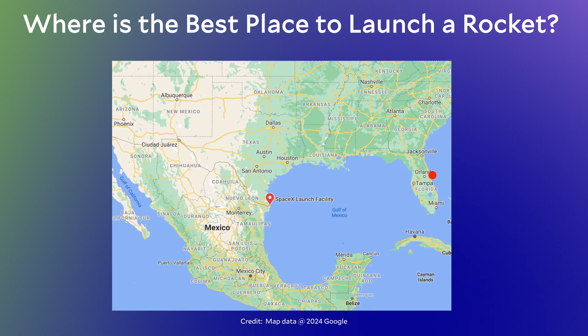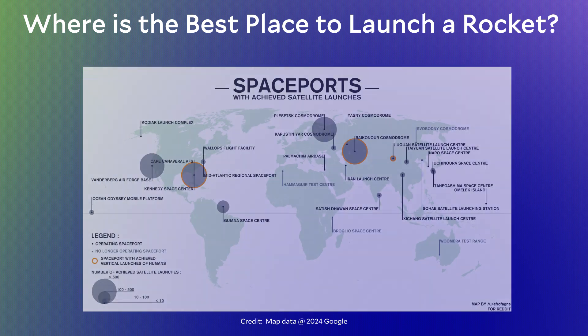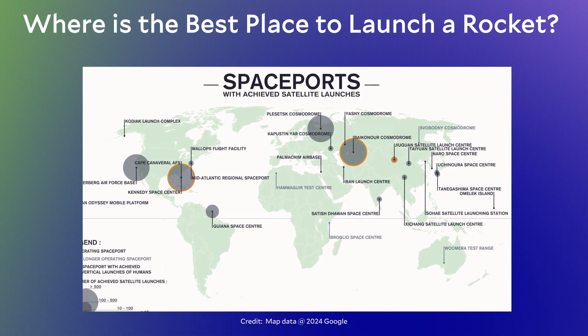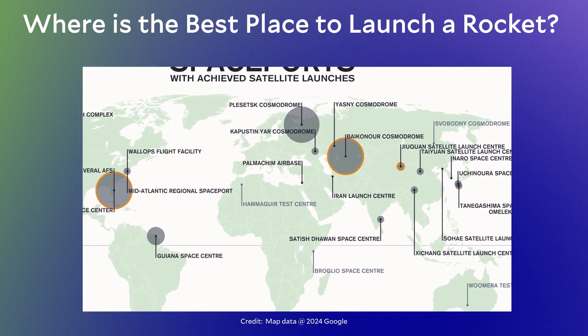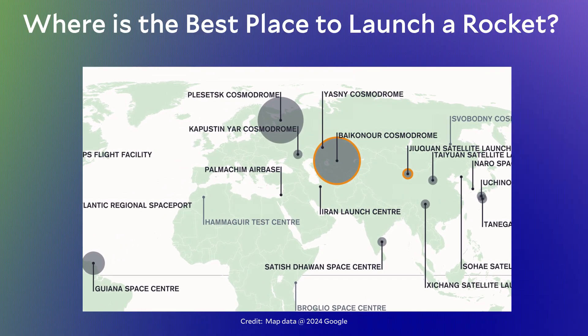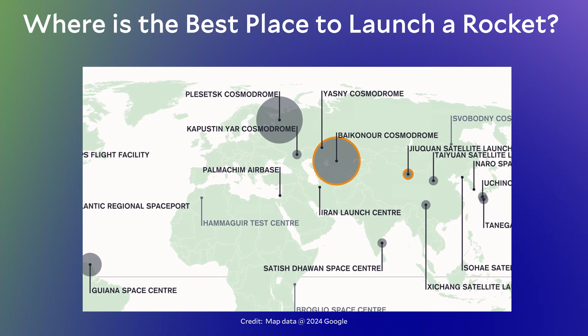Again, Boca Chica is fairly far south and launching to the east is over water. Thinking more globally, launch sites tend to be close to the equator, or as close as a particular country can get, with the ocean or some sparsely populated region to the east. The Russians often launch satellites from Baikonur Cosmodrome in Kazakhstan. Most of the resupply missions to the International Space Station have been launched from Baikonur, and this site fulfills our two criteria: fairly far south and very empty to the east.